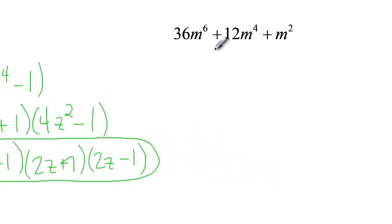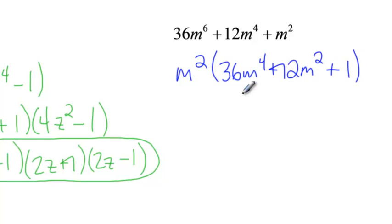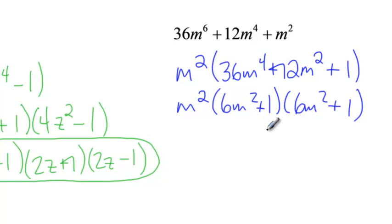Let's go and finish this last one. What's common in all three terms? Well, an m squared is common in all three terms. That's going to leave me with 36m to the fourth plus 12m squared plus 1. When I look at this, I'm going to say, okay, well, that could be like 6m squared and 6m squared. I'll just guess that. And then let's make this 1 and 1 because 6m squared and 6m squared is 36m to the fourth. 6m squared times 1 and 6m squared times 1 is 6m squared and 6m squared, which is 12m squared. And 1 times 1 is 1. And so that is factored.